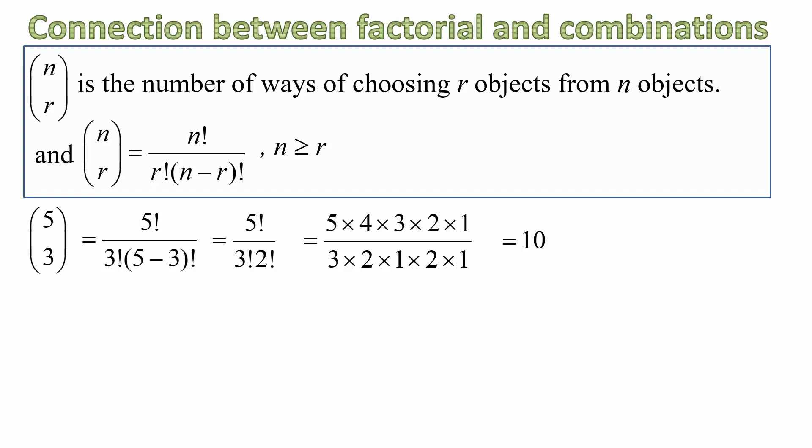Now, that means the number of ways of choosing 3 objects from 5 objects when the order is not important is 10. And you might want to convince yourself of that. Let's say choosing 3 letters from the letters A, B, C, D, and E. You will find that there are 10 ways of doing that.